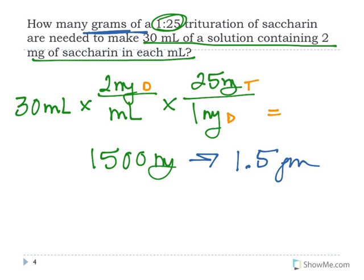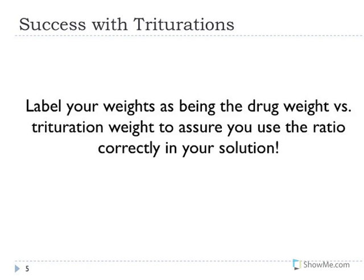So that's all it is for trituration problems. It's really that simple. So in order to be successful, label your weights. As you saw me doing, I was labeling whether I was talking about milligrams or grams of the drug, and milligrams or grams of the trituration. That's going to make sure you use the ratio correctly in your solution. From that, you should be able to practice some problems in the book without any problem.